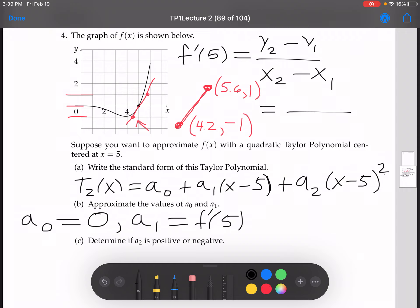So doing this math now, you got 1 minus a minus 1 all over 5.6 minus 4.2. And now I did this math, 1 minus minus 1, that's 2. So 2 over 1.4. And 2 over 1.4, I came out with approximately 1.42. And so a1 is approximately 1.42.